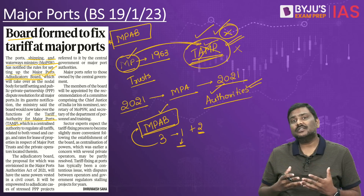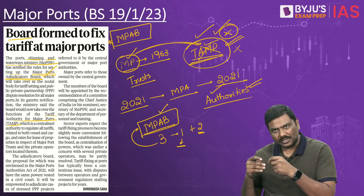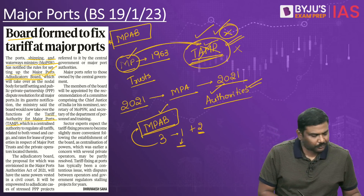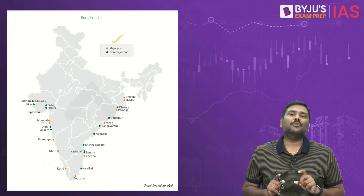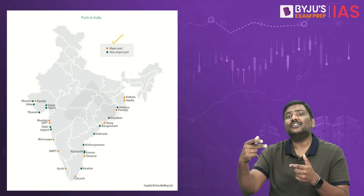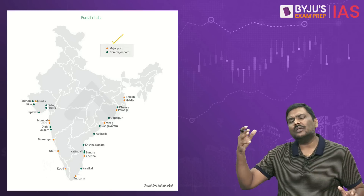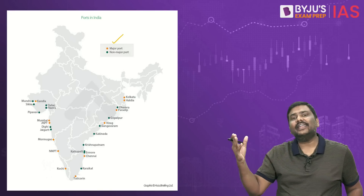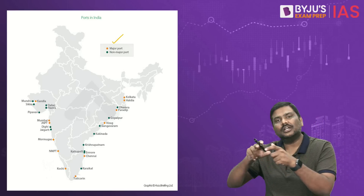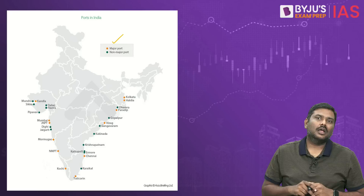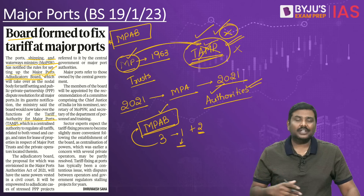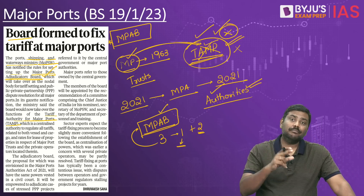With this structure, tariff decision-making is expected to be simpler, more transparent, and more efficient. This is important because over time, due to delays and tariff structures not reflecting market situations, major ports have been losing market share to non-major private ports. The government's structural change is expected to transform how tariffs are decided and implemented for major ports.